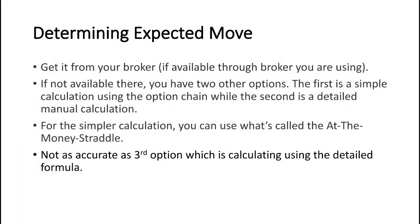What this means for traders is that it allows them to look at an entire range of possible values and determine the likelihood of a certain range being achieved. Now let's talk about determining the expected move. The simplest way is to get it from the option chain on your broker platform. Tastyworks is one of the brokers that just gives you the implied or expected move without you having to actually calculate it yourself. The term implied move is basically the same thing as the expected move.